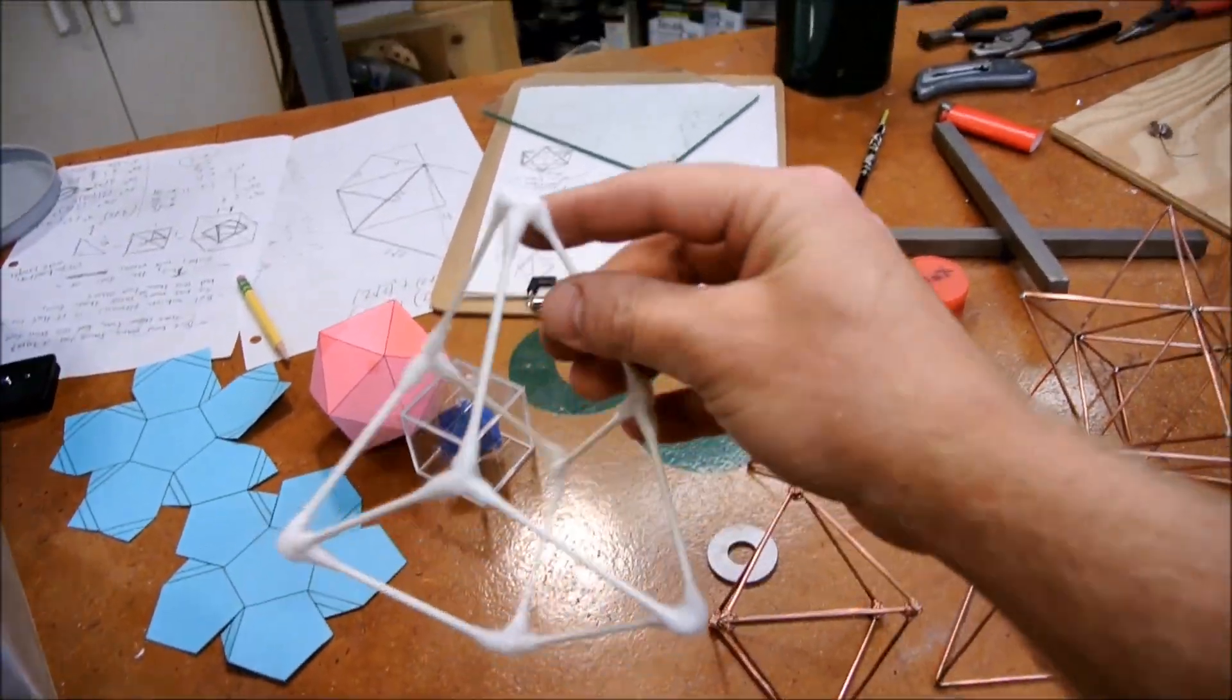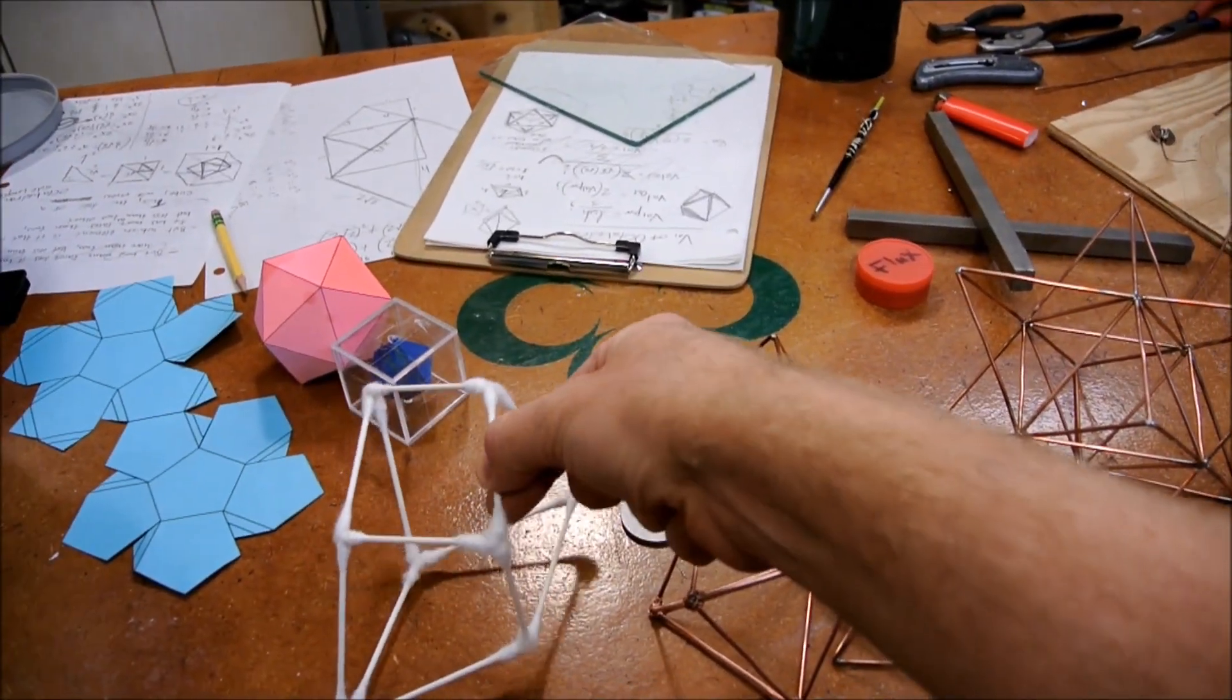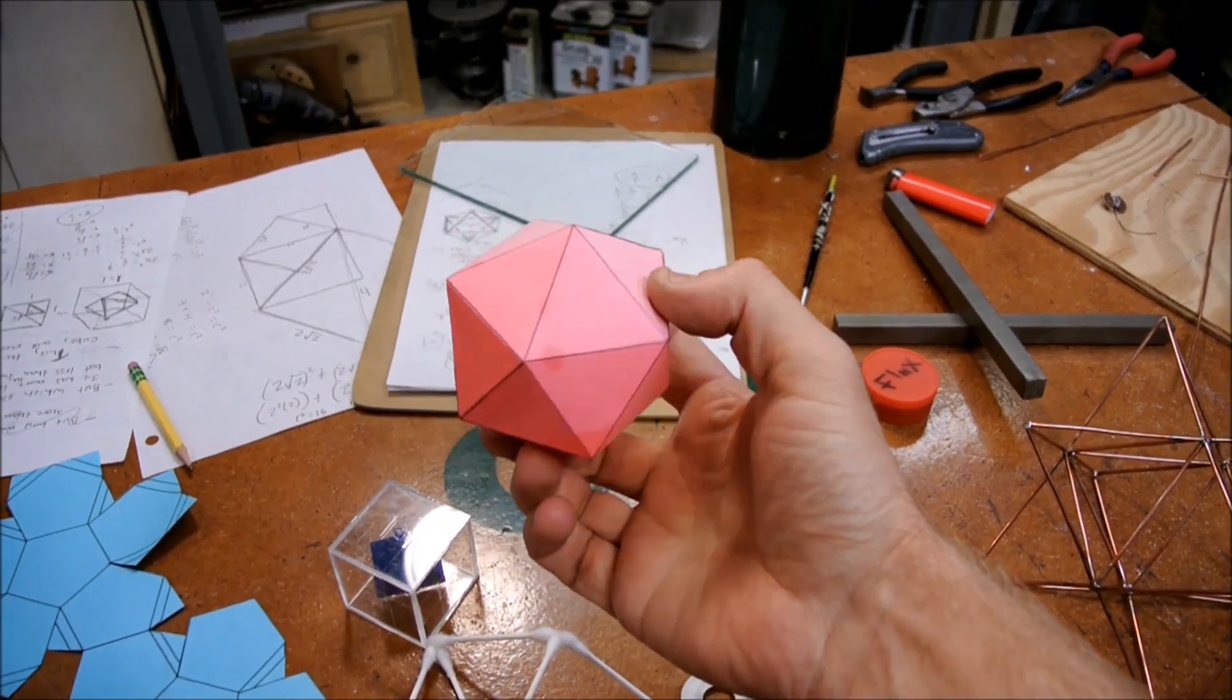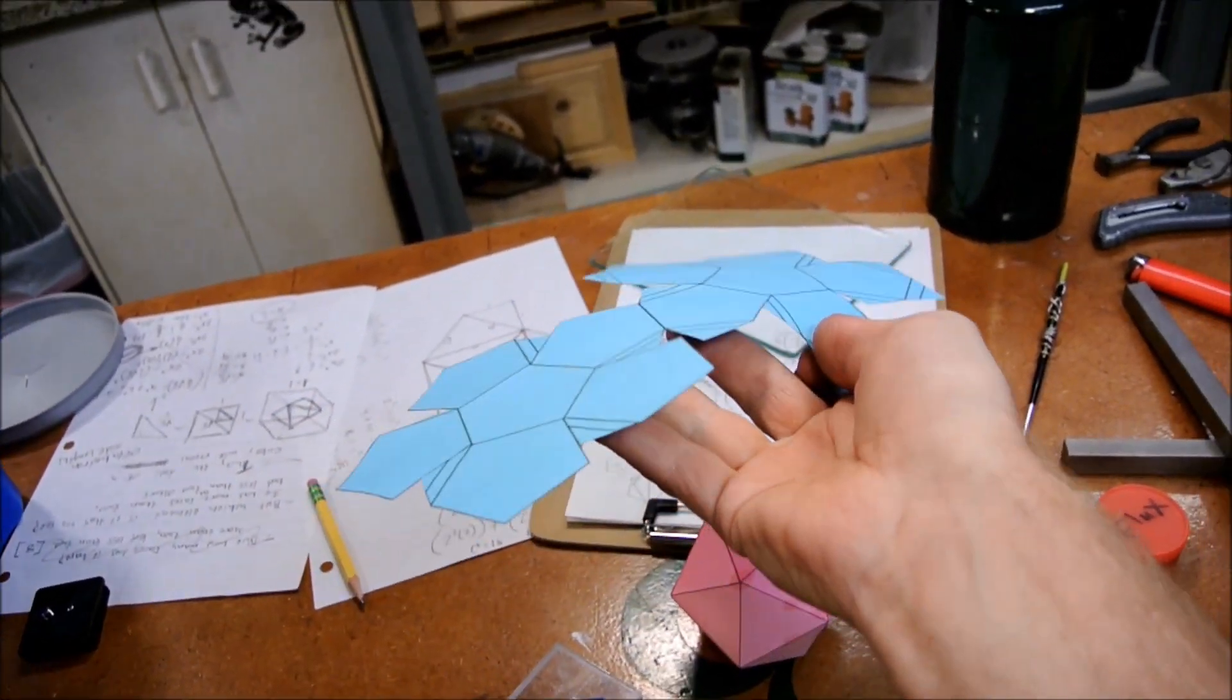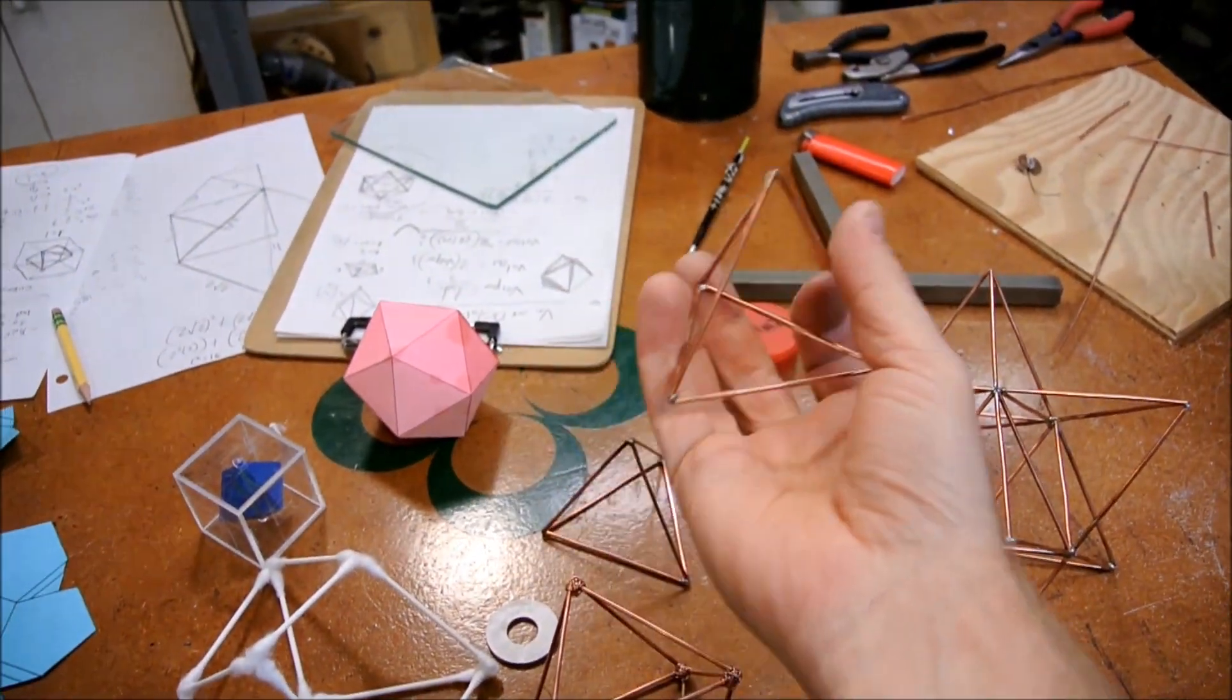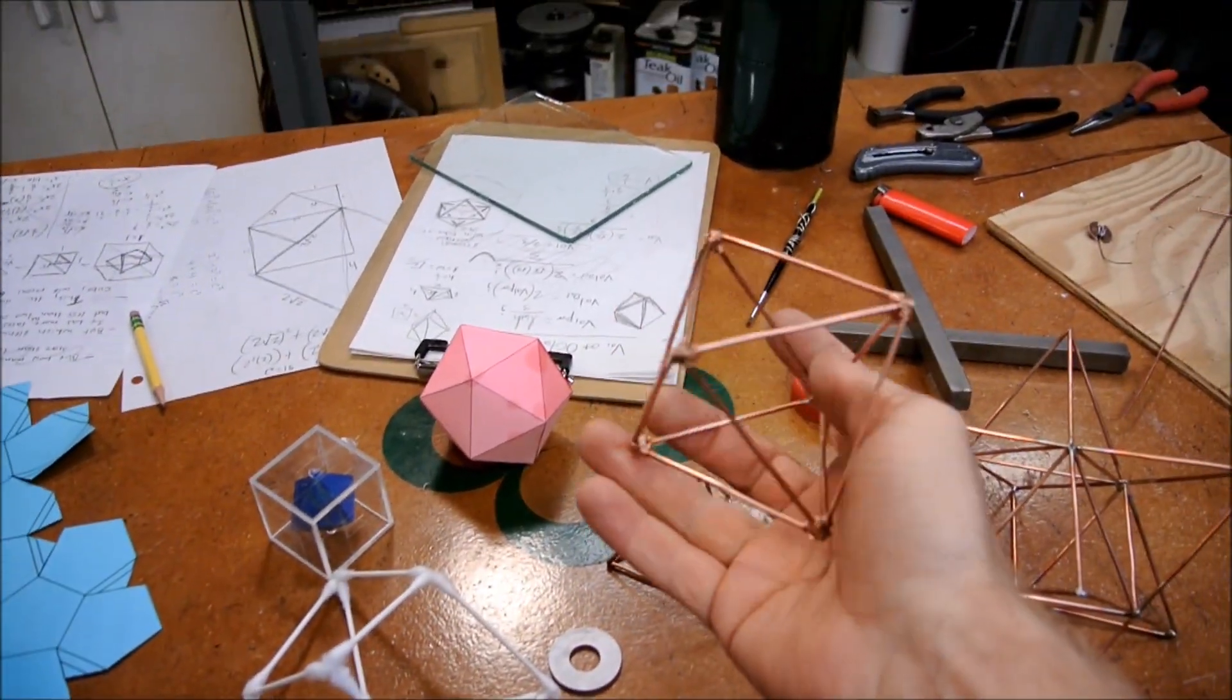There are five platonic solids. One is a cube - this is not a very fair representation but you know what a cube is. The icosahedron, the dodecahedron which this one's a little bit flat at the moment, the tetrahedron, and the octahedron.